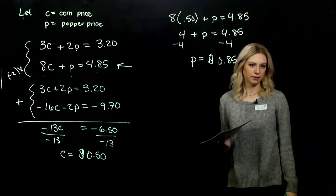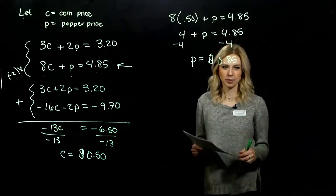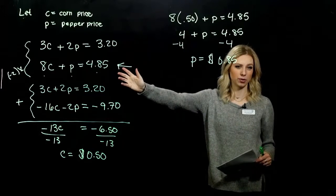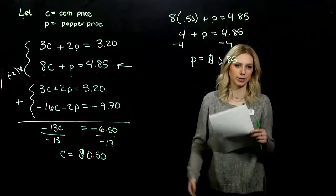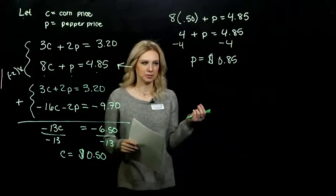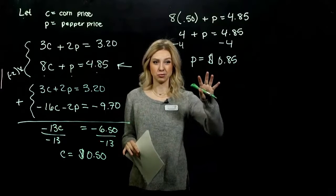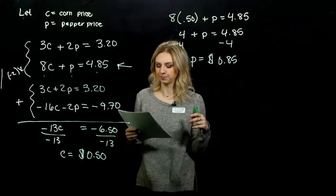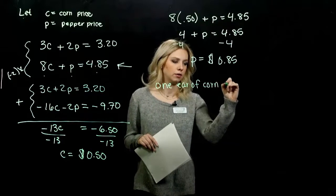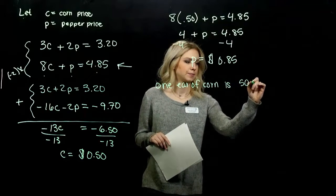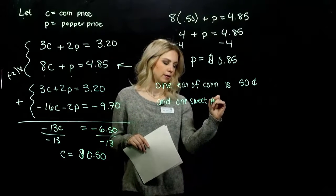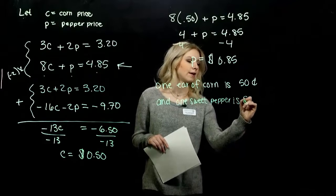And if we weren't sure if those values were actually true, plug it back into the original system. Make sure that it satisfies both of them. And as always with application problems, we want to sum it up. One ear of corn is 50 cents and one sweet pepper is 85 cents.